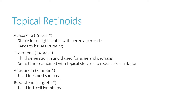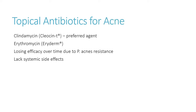Some later retinoids don't have that limitation and can be used in combination with benzoyl peroxide or during the day. These include adapalene, tazarotene, alitretinoin, and bexarotene. Bexarotene is used for T-cell lymphoma, and alitretinoin is used for Kaposi's sarcoma found in HIV patients. The big ones for acne are adapalene — which is stable in sunlight, can be used with benzoyl peroxide, and is a little less irritating than tretinoin — and tazarotene, a third-generation retinoid used for acne and psoriasis, often combined with topical steroids to reduce skin irritation.